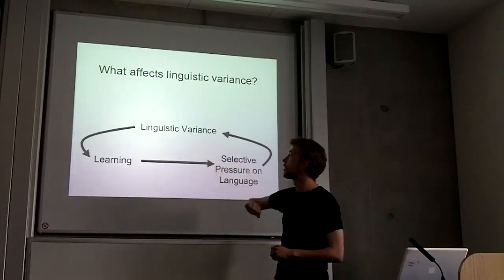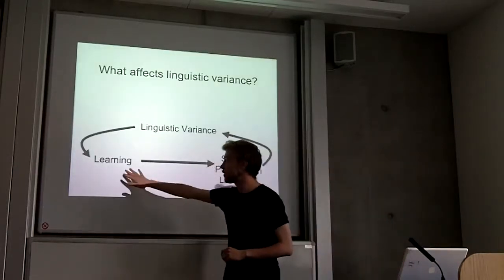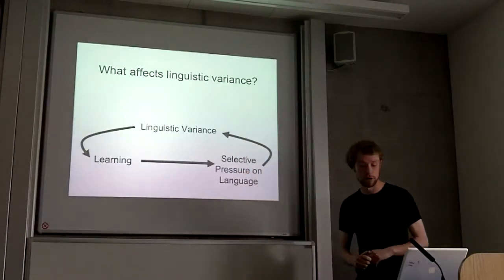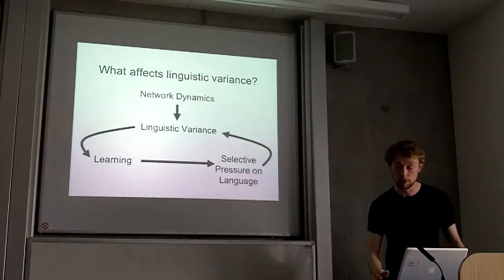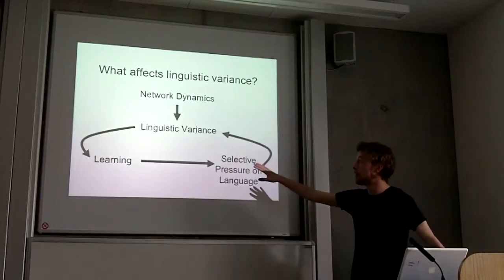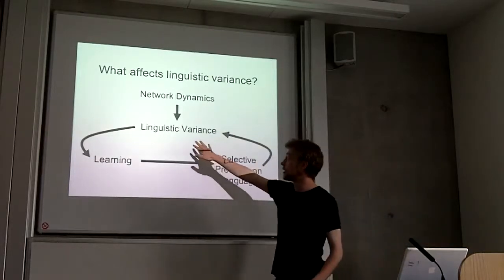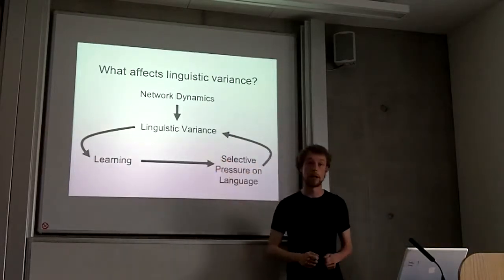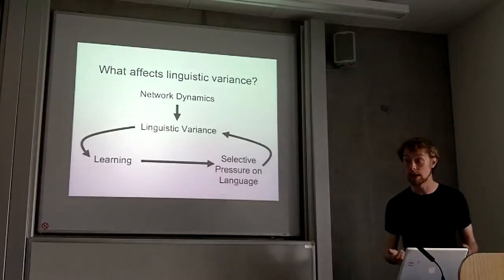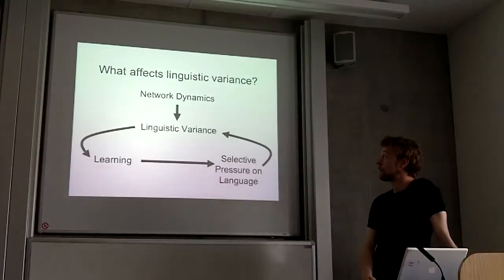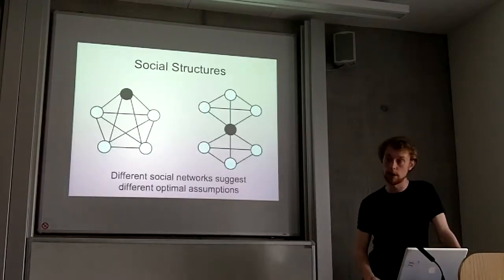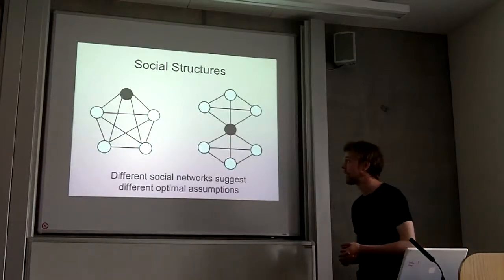So what we've seen is that if the amount of linguistic variance affects your learning, this affects the selective pressure on language. I'm going to talk very briefly about how network dynamics can influence linguistic variance and how this might be a source — possibly an additional source — for two different kinds of approaches to learning.